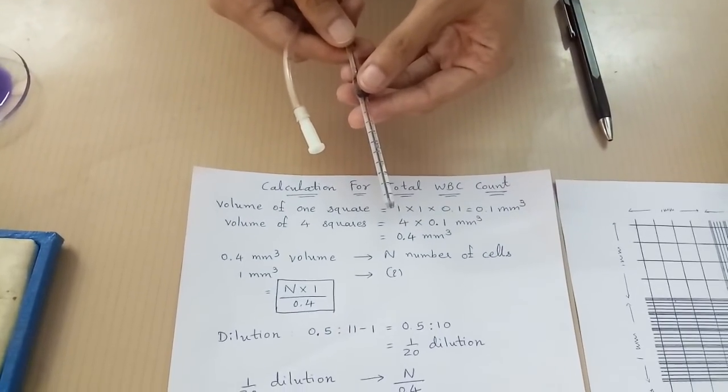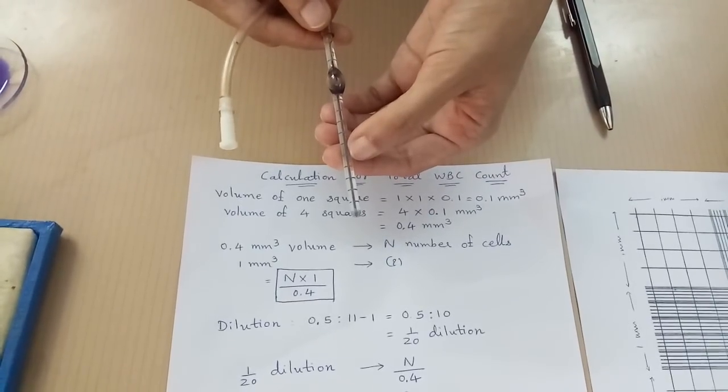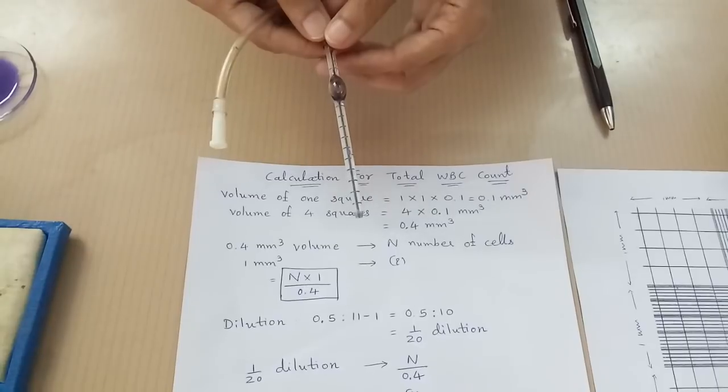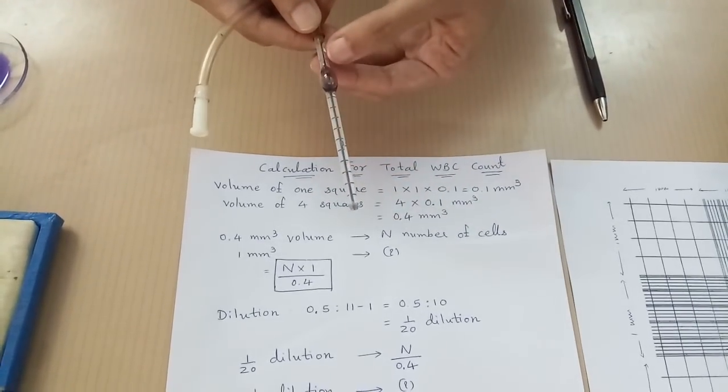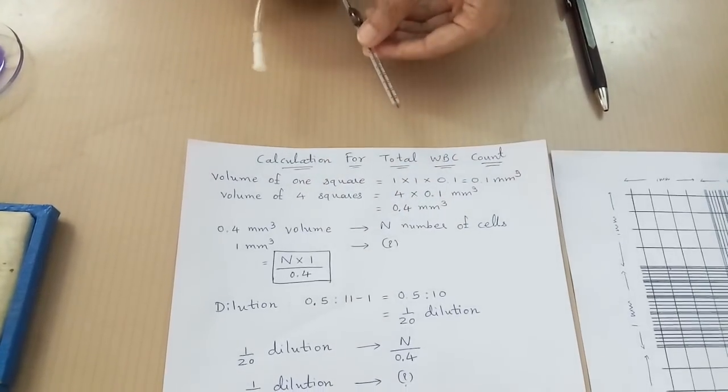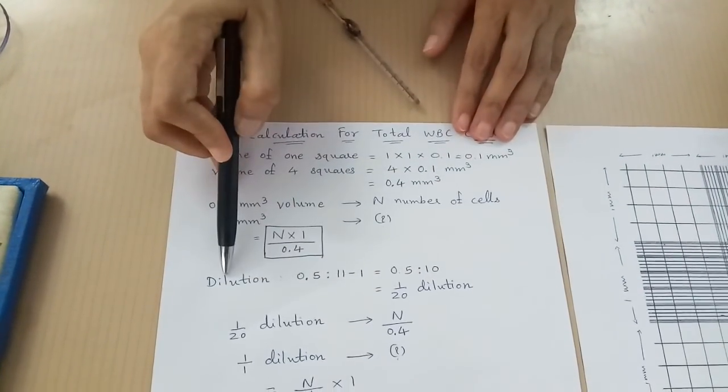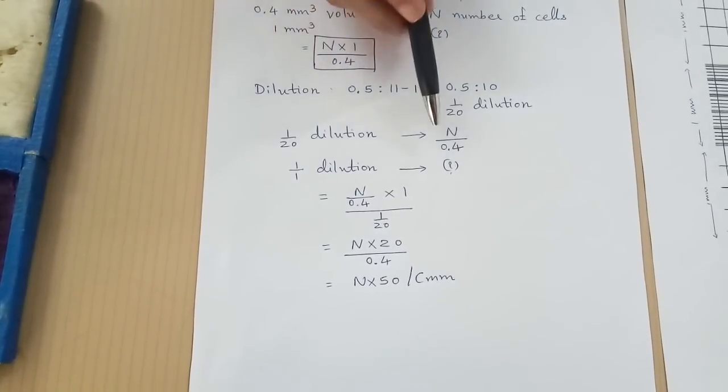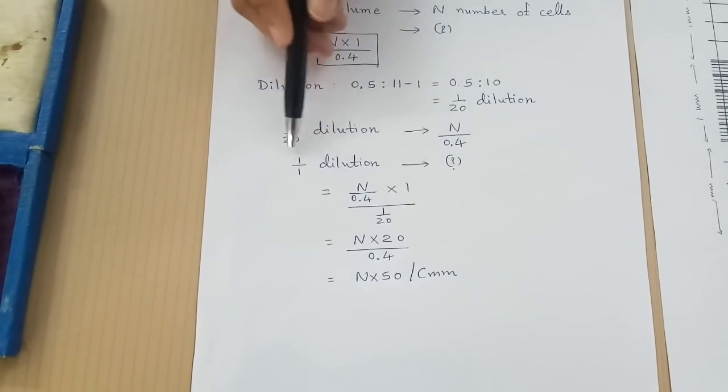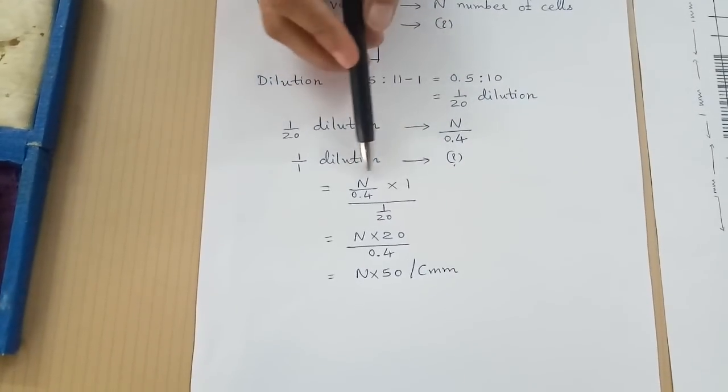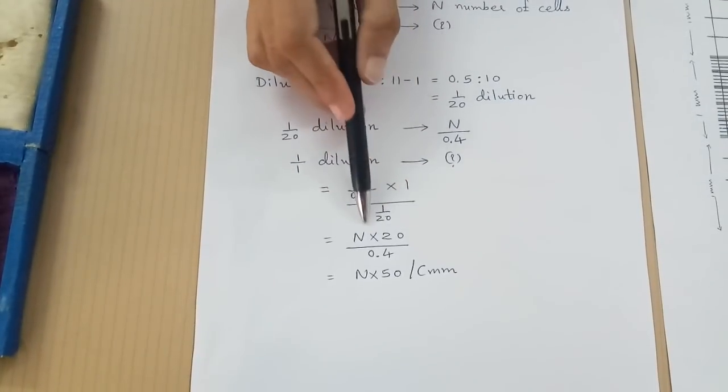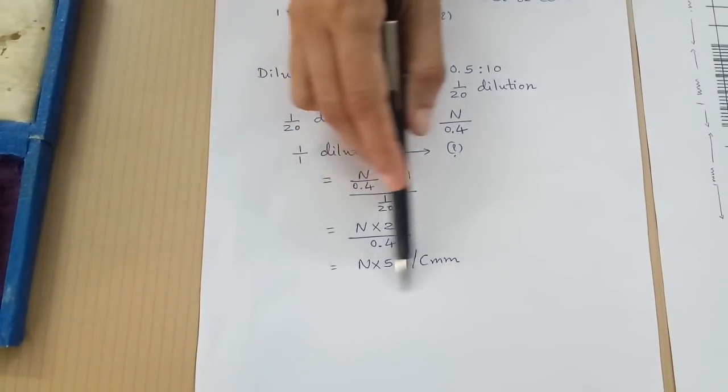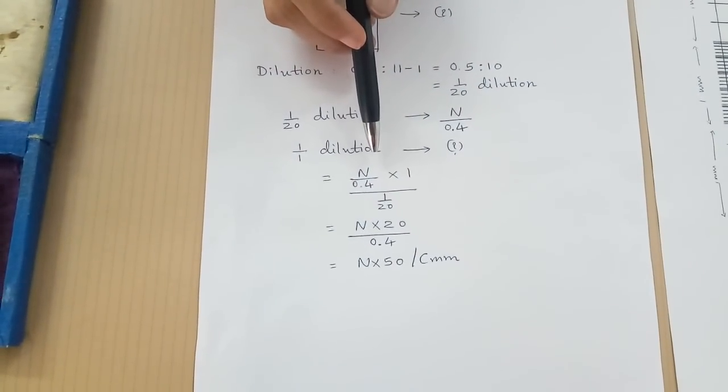Dilution: here we have taken blood up to 0.5 mark and diluted it up to 11 mark. As the fluid in the stem part, 1 part, does not take part in the dilution, our dilution is 0.5 to 11 minus 1, which equals 0.5 to 10, or 1 to 20. You can see here dilution is 1 to 20. In 1 to 20 dilution, our count is N by 0.4. Therefore, in undiluted blood 1 to 1 dilution, the count is N upon 0.4 multiplied by 20. Therefore, the count is N multiplied by 20 divided by 0.4, or N multiplied by dilution factor divided by volume, which equals N multiplied by 50.